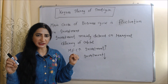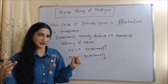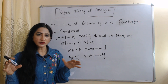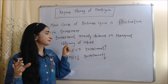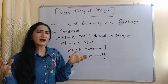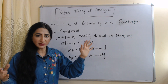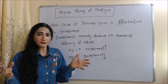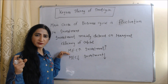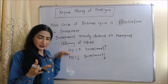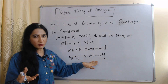Now we will see the Keynesian Theory of Trade Cycle. According to this theory, the main cause of business cycle is fluctuation in investment. Investment mainly depends on Marginal Efficiency of Capital. Marginal Efficiency of Capital means profit expectation from a given investment — how much profit we expect from a given investment. When Marginal Efficiency of Capital increases, profit expectations increase, so investment also increases. When Marginal Efficiency of Capital falls, investment also falls.